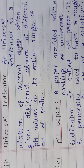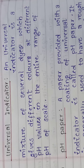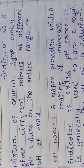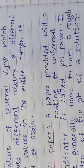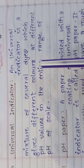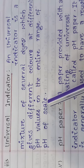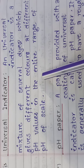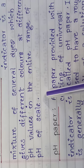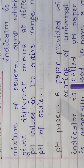Now we discuss the universal indicator. Common indicators basically indicate only the acidic and basic nature of a solution; they do not give the strength of acidic and basic solutions. So a universal indicator is a mixture of several dyes which give different colors at different pH values in the entire range of the pH scale.